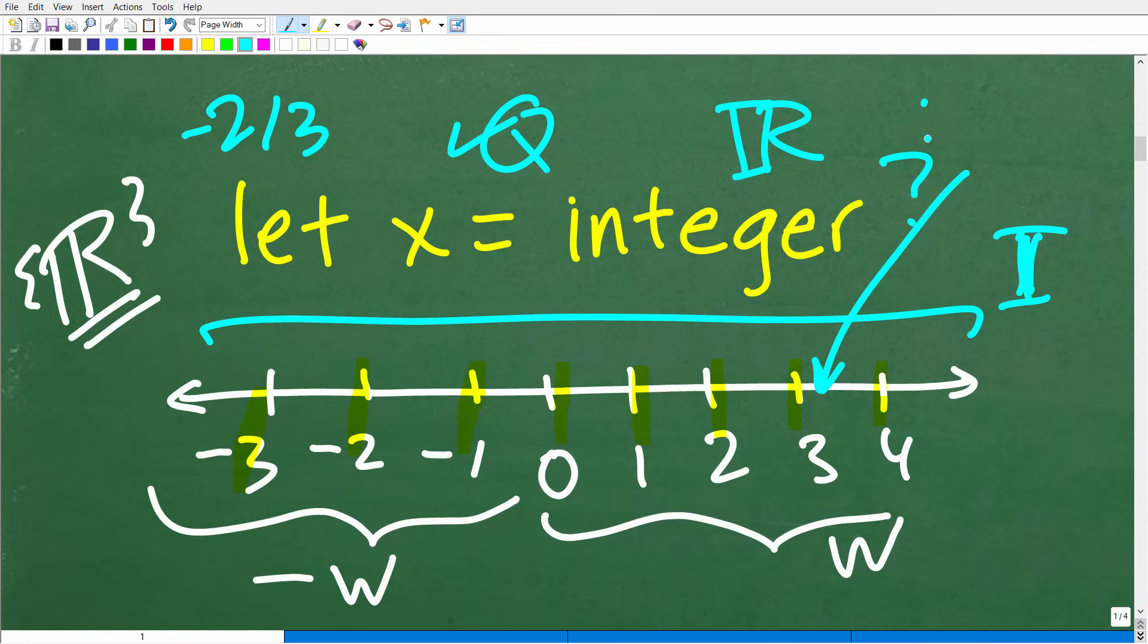These would be numbers like pi, for example, 3.14, etc., or the square root of 2. These types of numbers are irrational numbers.